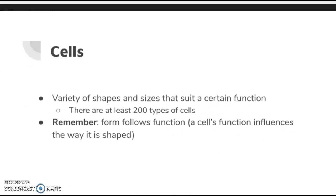Cells come in a variety of shapes and sizes, and the whole purpose behind that is that the shapes and sizes of a cell suit the function of the cell. In anatomy and physiology, we say that structure follows function — a cell has the shape and size that it does based on what its function is.